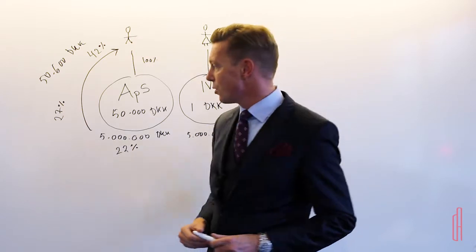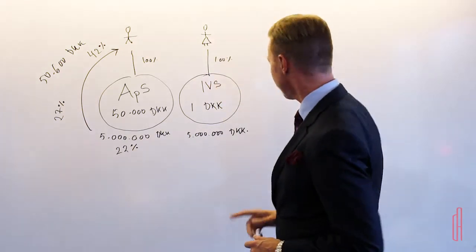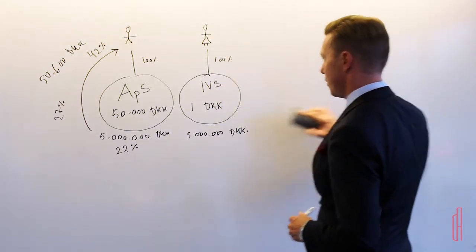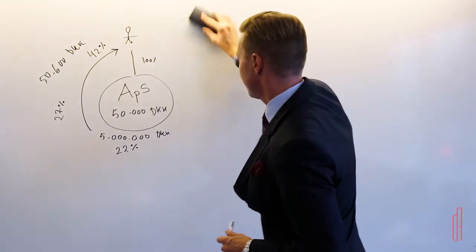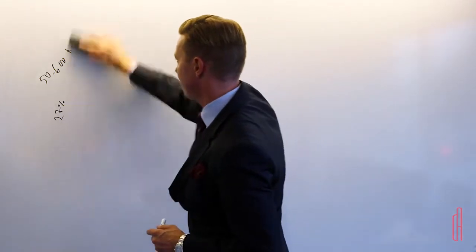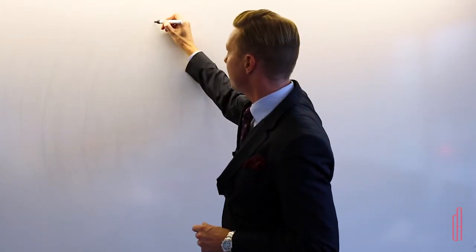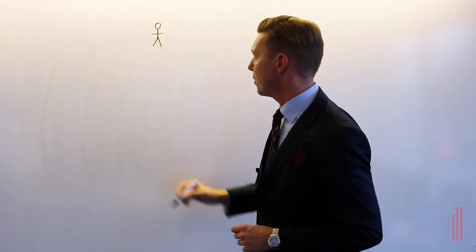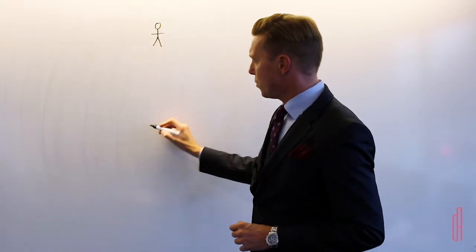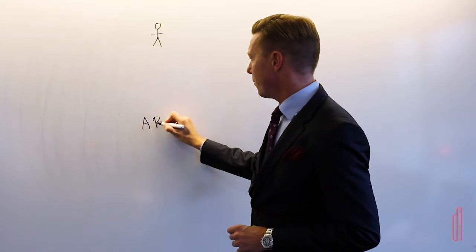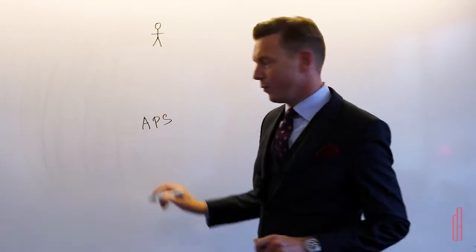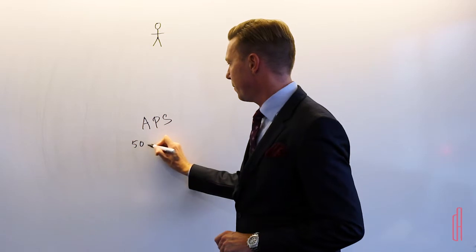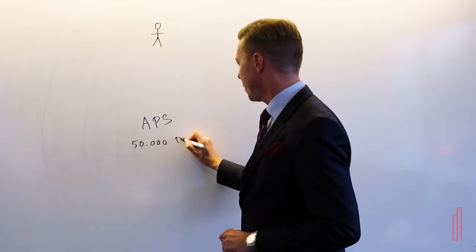So what they can do instead, I'll just erase this here. What they do instead is that when they establish the company, I'll just put one person here because it's easier. When he wants to create this APS here, then he does just like he did before. He needs the 50,000 kroner here in equity capital.